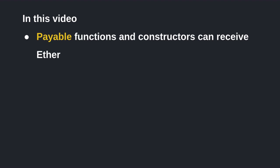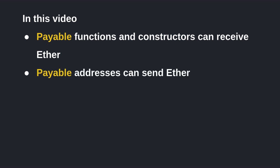In this video we went over how to use the keyword payable. When you declare a function as payable, that function can receive ether. When you declare a constructor as payable, you can send ether when deploying the contract. And if you want to send ether to another address, you have to declare that address as payable. In the next video I'll be talking more about how to transfer ether to another address. Thanks for watching — see you in the next video, and have a nice day.